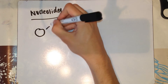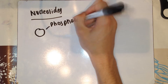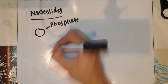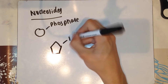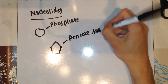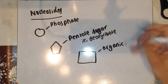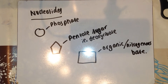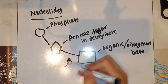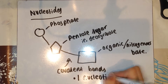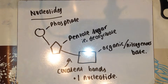Now I'm going to talk about what goes into a nucleotide. You have a phosphate group, you have a pentose sugar such as deoxyribose, and you have an organic or nitrogenous base. Covalent bonds form to link them together, and this makes one whole nucleotide.